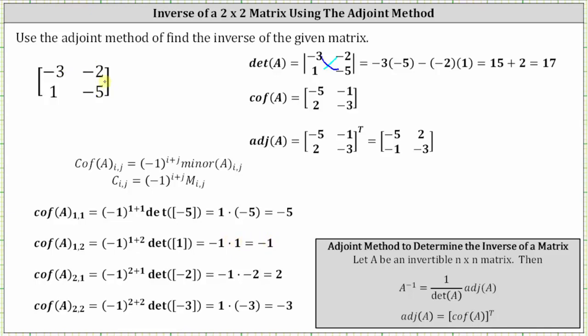Next, we have cofactor A sub 2,1, which is equal to negative 1 raised to the power of 2 plus 1 times the corresponding minor. To find the minor, we eliminate row 2 and column 1, which leaves us with the 1 by 1 matrix with an entry of negative 2. Simplifying, we have the cube of negative 1, which is negative 1. The determinant is equal to negative 2, and therefore the cofactor is negative 1 times negative 2, which is positive 2.